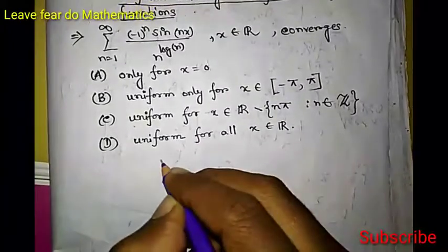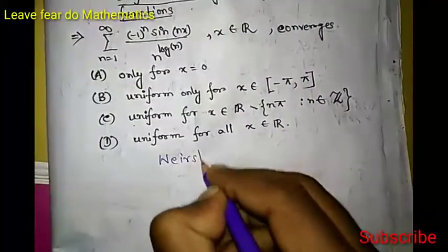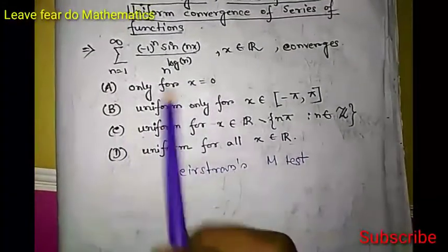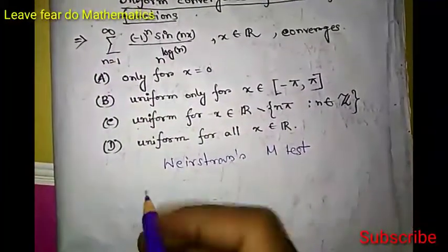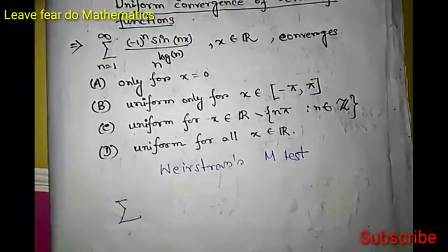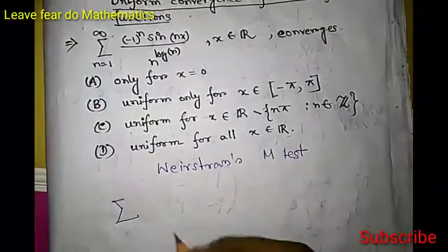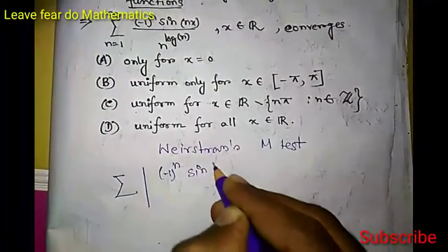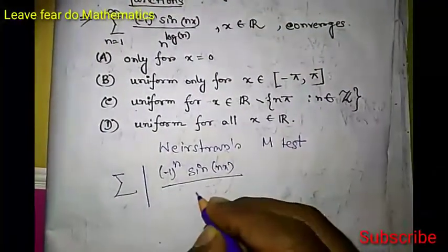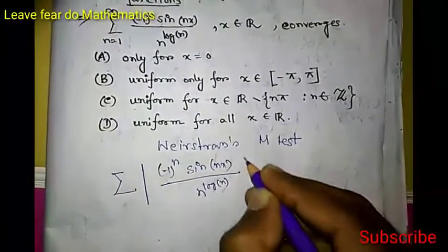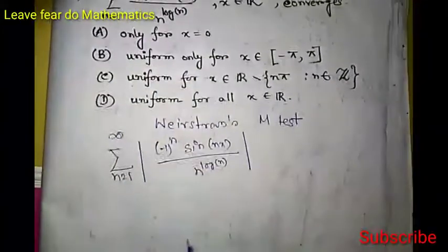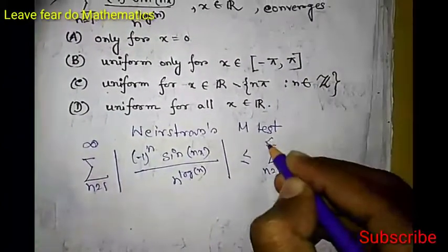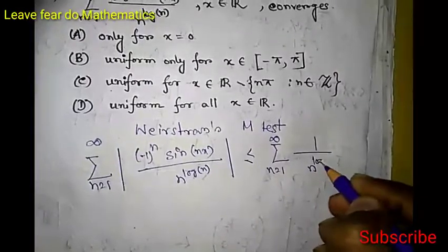We will prove this using the Weierstrass M-test. Let us find the absolute series. The absolute value |(-1)^n sin(nx) / n^(log n)| summed from n=1 to infinity is less than or equal to the sum from n=1 to infinity of 1/n^(log n), since |sin(nx)| ≤ 1.